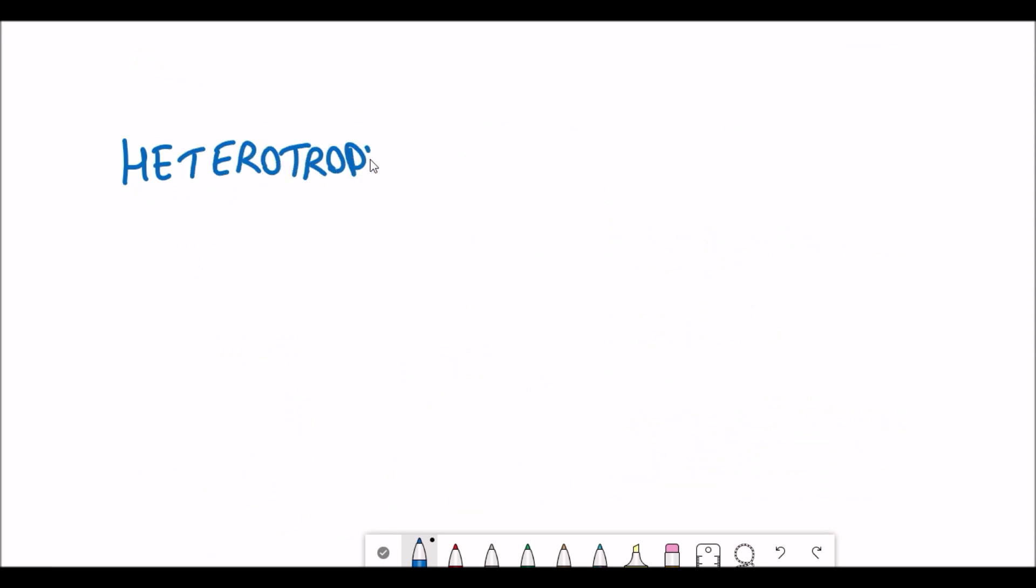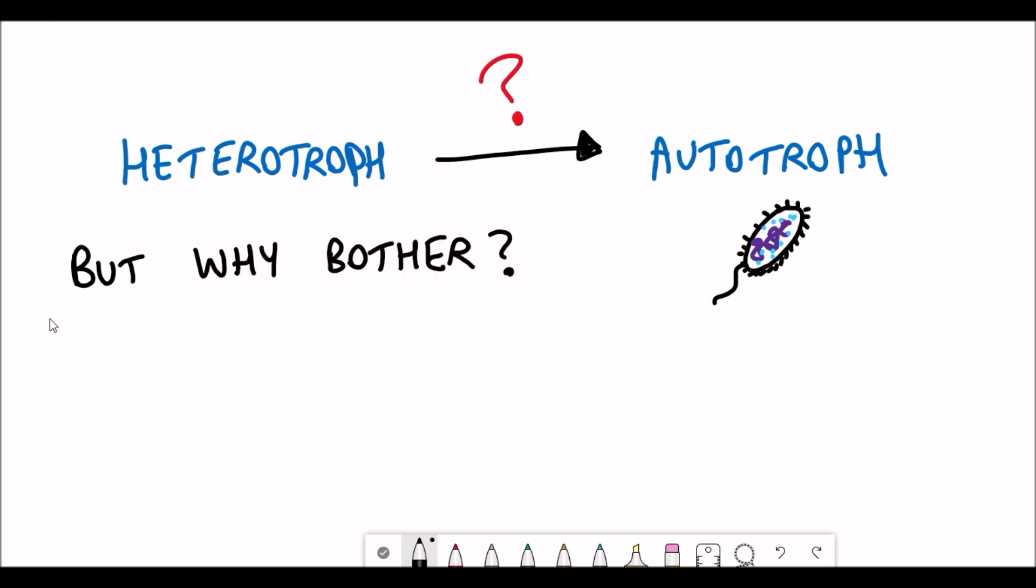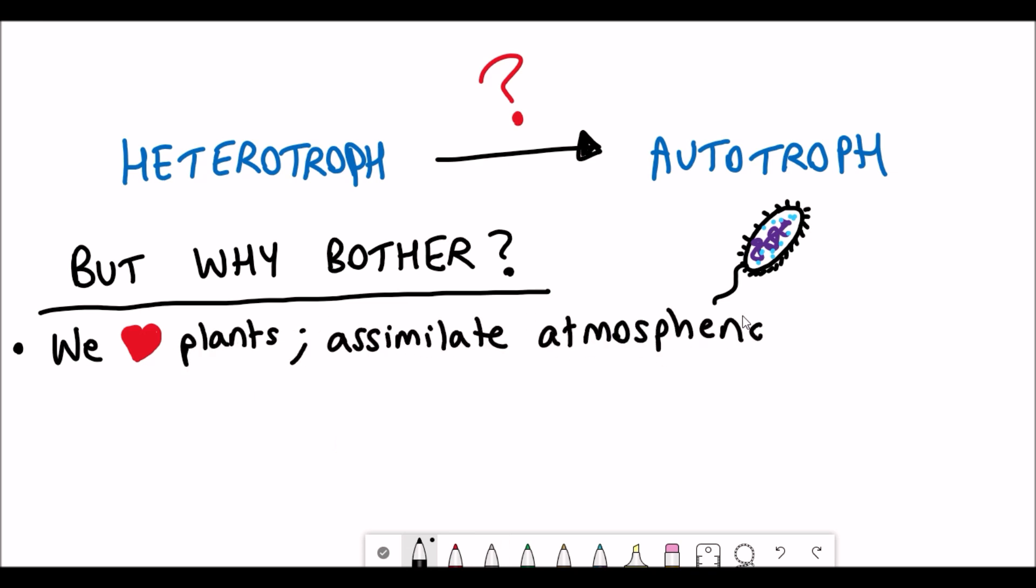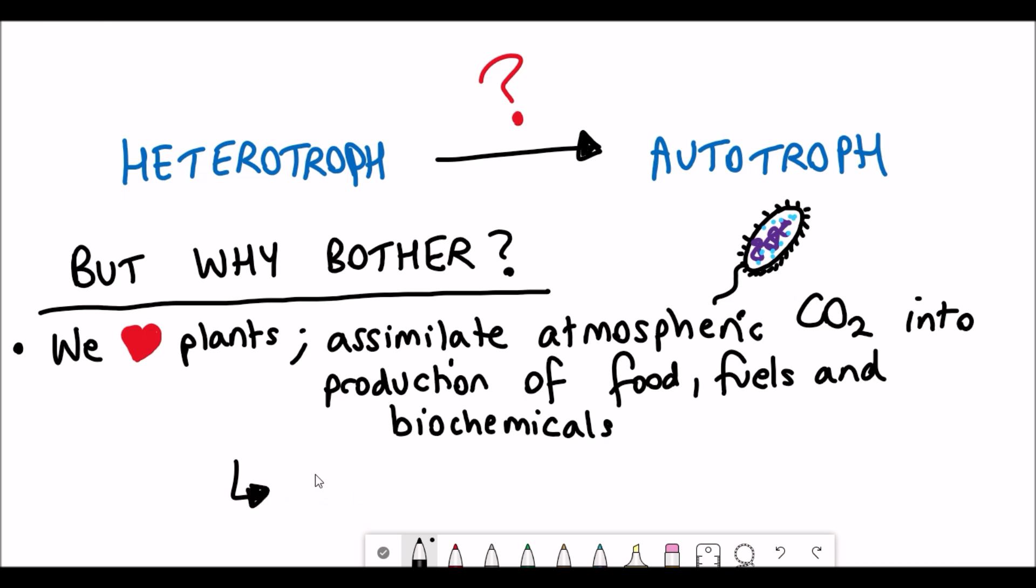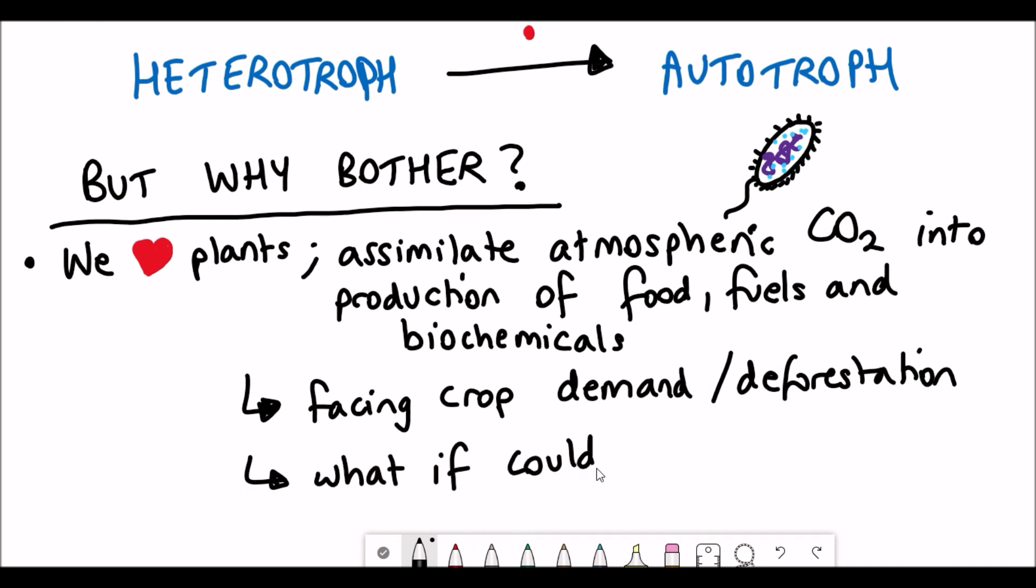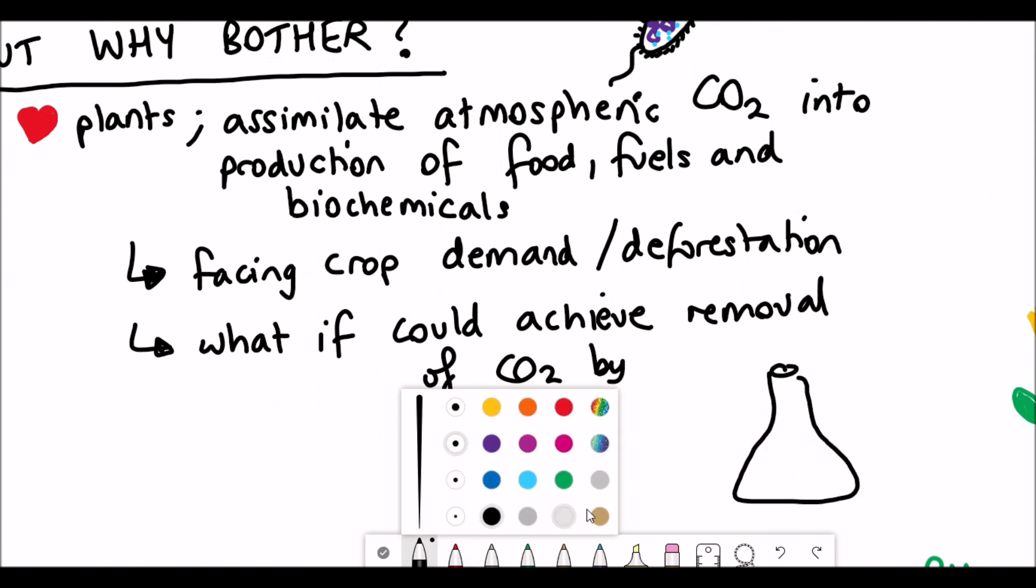So what this paper set out to do was to see whether or not they could convert E. coli, which is a heterotroph, into an autotroph, which means getting it to use carbon dioxide as its food production source. But why actually bother with this in the first place? Well, we love plants, or at least I do. What plants do is they assimilate the atmospheric carbon dioxide into the production of food, fuels, and also biochemicals. Since we're facing crop demand, there's huge deforestation, wouldn't it be great if we could use and culture E. coli to achieve this instead?